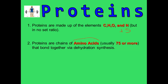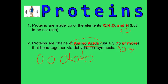Proteins are chains of amino acids, and those chains can be anywhere from 30 to in the 30,000 range. Those amino acids get bound together by dehydration synthesis, and they form special bonds between the amino acids called peptide bonds.